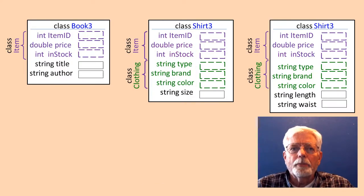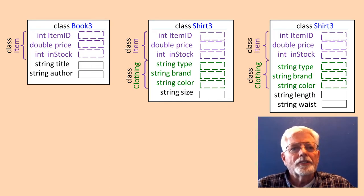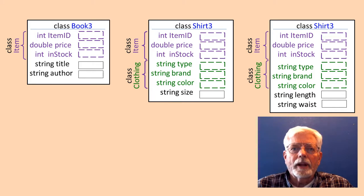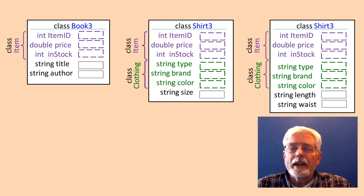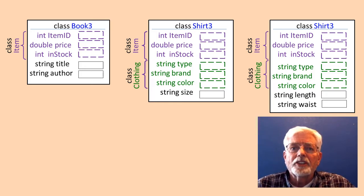Although class book is only declaring variables for title and author, it also inherits item ID, price, and in stock from class item. Class shirt only declares one variable named size, but it inherits brand and color from class clothing, which inherits item ID, price, and in stock from class item.